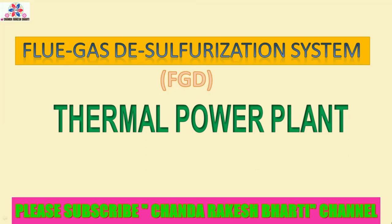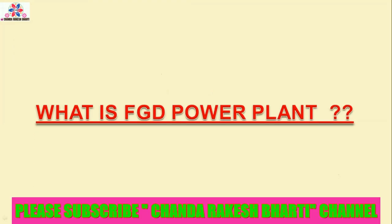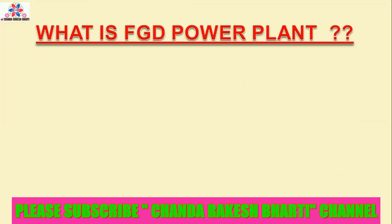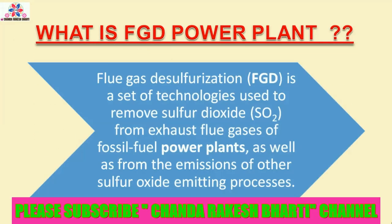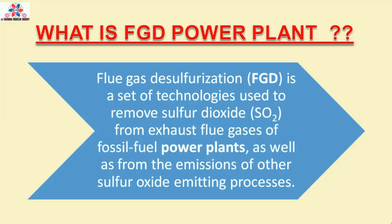FGD Power Plant: Flue gas desulfurization is a set of technologies used to remove sulfur dioxide from exhaust flue gases of fossil fuel power plants, as well as from the emissions of other sulfur oxide emitting processes.